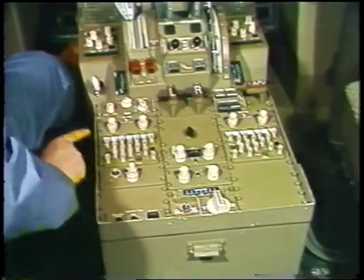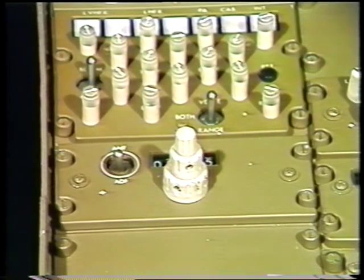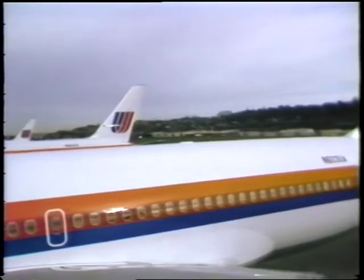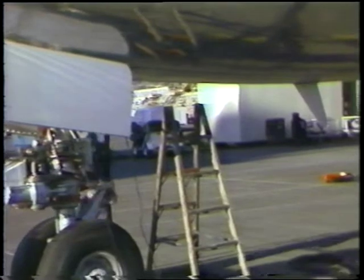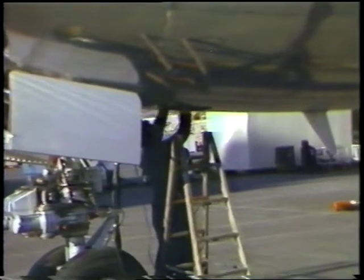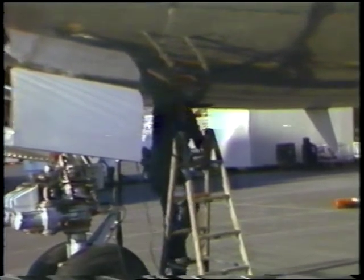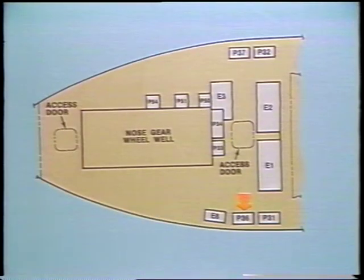Power for the ADF is provided through the left ADF circuit breaker on the P11 panel. The ADF control panel is located on the aft pilot's control stand P8. The ADF antenna is located on the top of the aft fuselage at station 1122. Access to the main equipment center is through the external access door aft of the nose wheel well.